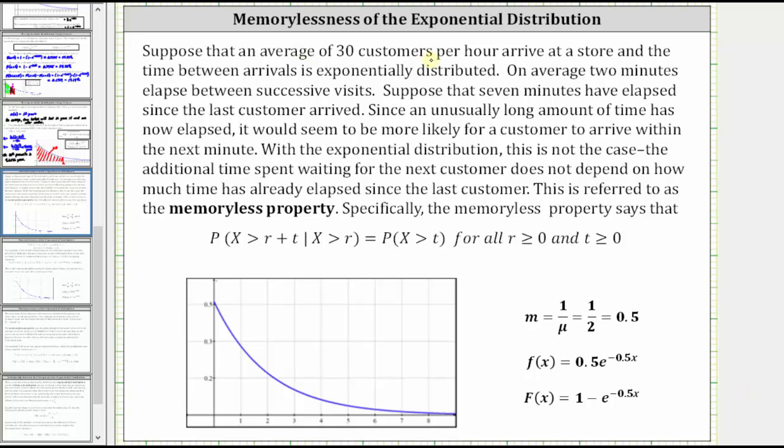Welcome to a lesson on the memorylessness of the exponential distribution. Suppose that an average of 30 customers per hour arrive at a store and the time between arrivals is exponentially distributed.